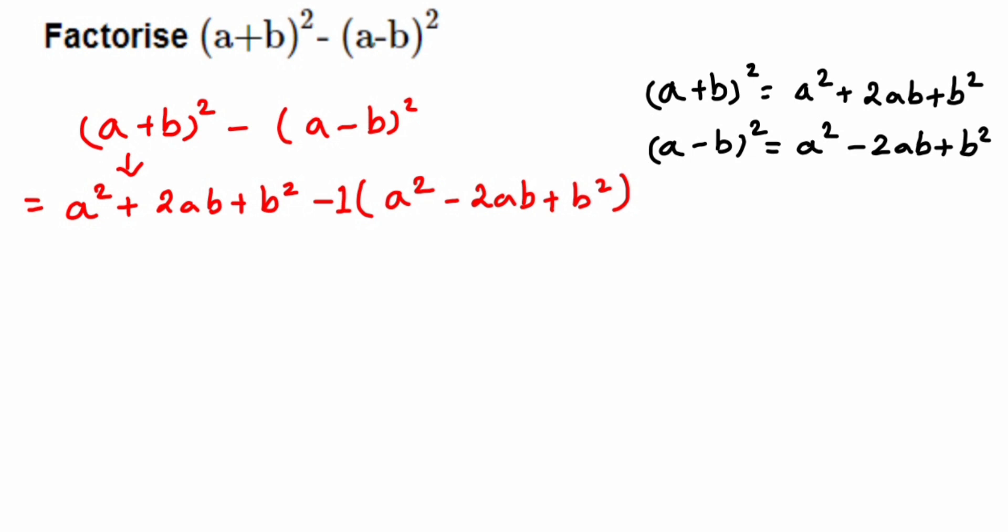This is equal to a² + 2ab + b². Now we're going to start multiplying with the negative sign. Minus into a² will be minus a².